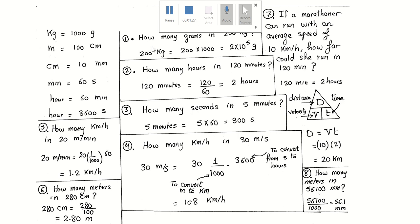Problem number one: how many grams in 200 kilograms? Since one kilogram equals 1000 grams, all I have to do is multiply 200 times 1000, which gives 200,000, or 2 times 10 to the power of 5 grams.